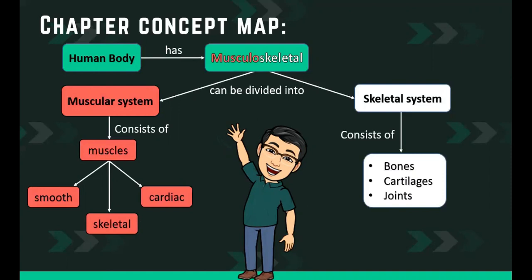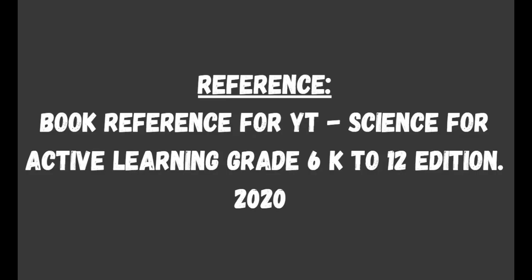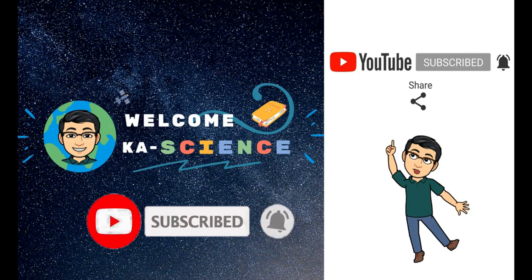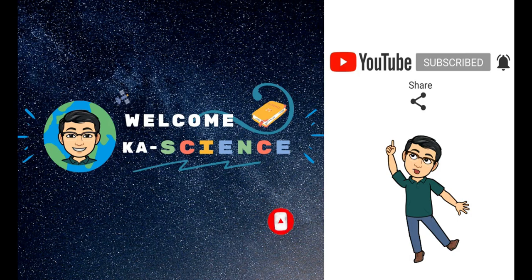To recap: the human body has a musculoskeletal system divided into the muscular system and the skeletal system. The muscular system consists of smooth, skeletal, and cardiac muscles. The skeletal system consists of bones, cartilages, and joints. If you have questions, feel free to type them in the comments below. If you learned something today, don't forget to like this video and subscribe for more educational videos.